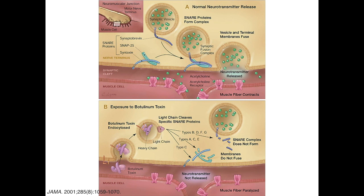The top figure shows normal synaptic vesicle fusion. The bottom figure shows the actions of botulinum toxin. In the first step of toxin action, the toxin binds to the plasma membrane at gangliosides containing sialic acids and proteins using the heavy chain. It is then internalized via receptor-mediated endocytosis. Inside the endocytotic vesicle, the heavy and light chains separate by cleavage of the disulfide bond between them. The light chain translocates into the cytosol.